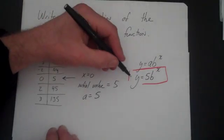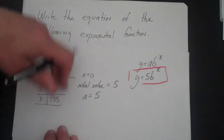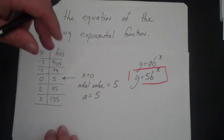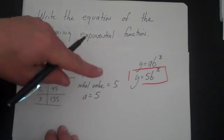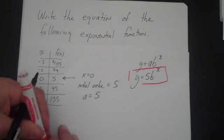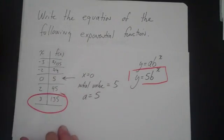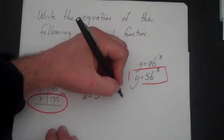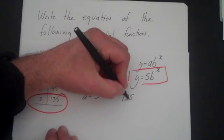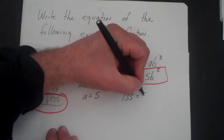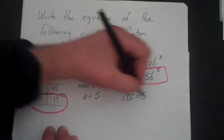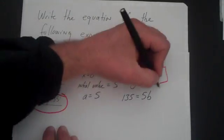So what we do is we take this problem and we take any other point. It doesn't matter which one. We temporarily plug in x and y to find b. This is very much like a problem we did with the parabolas. Let's plug in this one, 3 and 135. So then you temporarily plug in 135 for y, times 5, b raised to the power of 3.